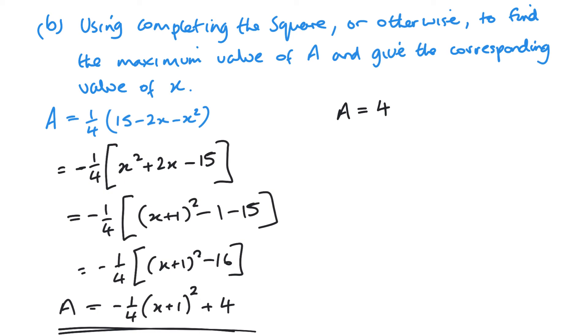And this will happen when X is negative 1. Because when X is negative 1, that then makes this bracket 0 and a minus quarter times 0 squared is obviously 0.